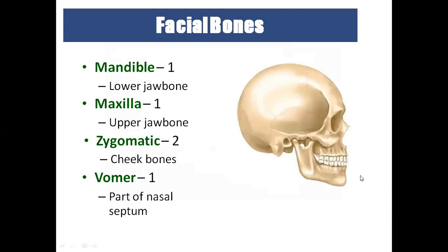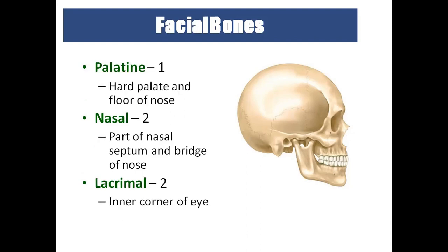The facial bones include: two maxilla (upper jawbone), one mandible (lower jawbone), two zygomatic bones (cheekbones), two lacrimal bones (near the eye), two nasal bones, one vomer bone (in the center of the nose), and two palatine bones (inside the roof of the mouth). Touching the roof of the mouth reveals the hard palate, which is the palatine bone.